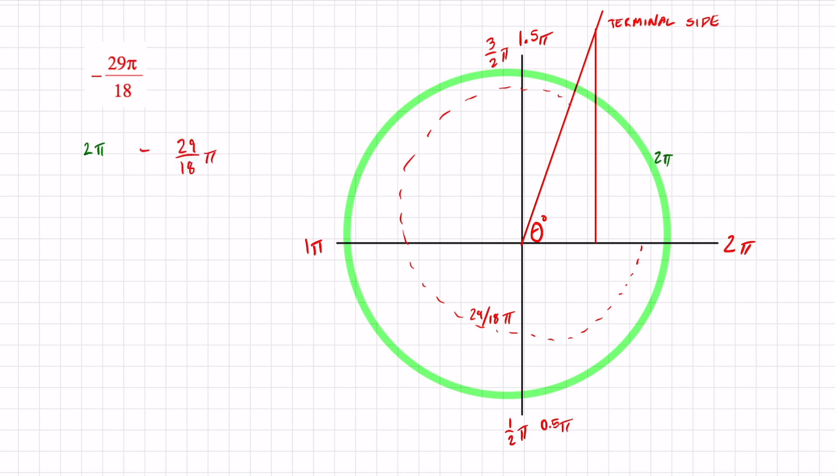From here on out, it's just some fraction work. I got a denominator of 18. So I just got to multiply this by 18 over 18. That's going to give me 36 over 18 π minus 29 over 18 π. 36 minus 29 is 7 over 18 π. I don't think I can reduce that. And that's it. That is my reference angle.